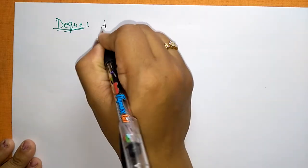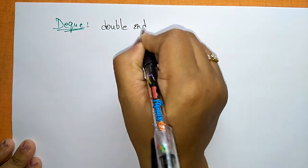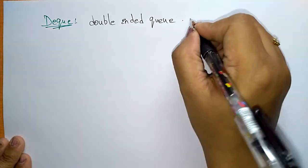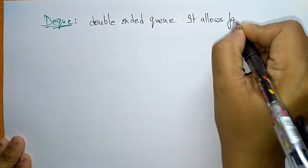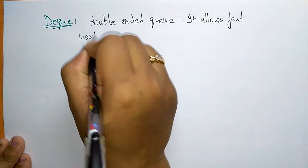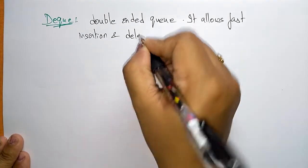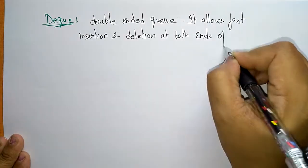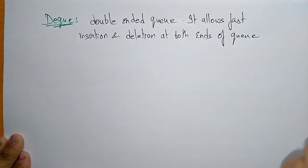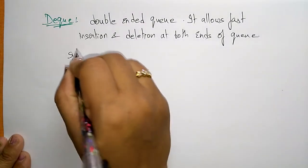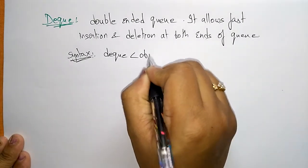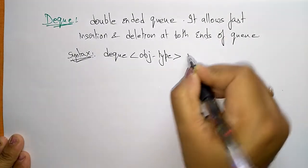Deque stands for double-ended queue. The main use of the deque is that it allows fast insertion and deletion at both ends of the queue. The syntax for this deque is: deque<object_type> dq_name.